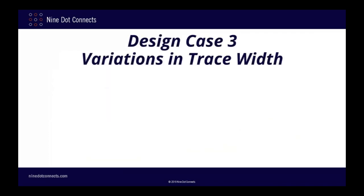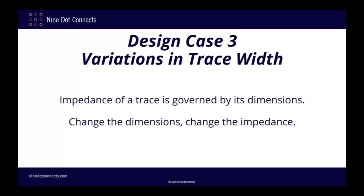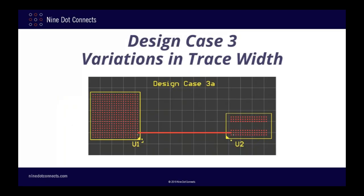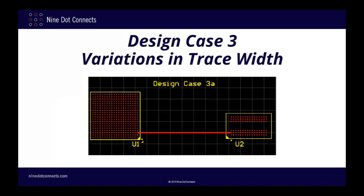I would now like to examine the signal integrity effects due to variations in the width of a trace. The impedance of a trace is governed by its dimensions, and changing these dimensions will affect the impedance and thus the integrity of the signal. But just how badly do these changes affect things and when do we have to be worried? To explore this issue, I've modified my initial ideal route to have a trace length of 32 mils, then changed the routing to have a wider trace in the middle — 45 mils wide, three times the original trace — to emphasize the impedance mismatch for demonstration purposes.